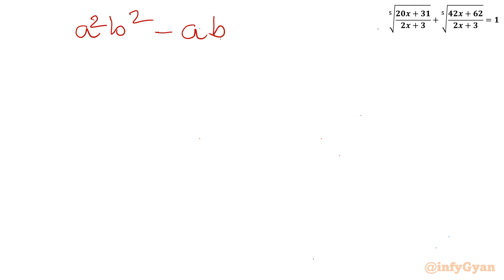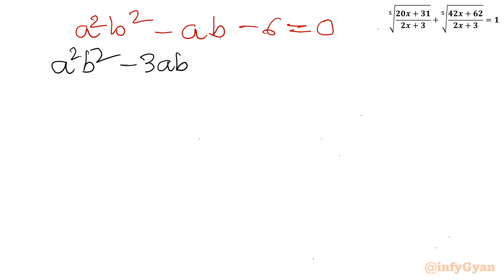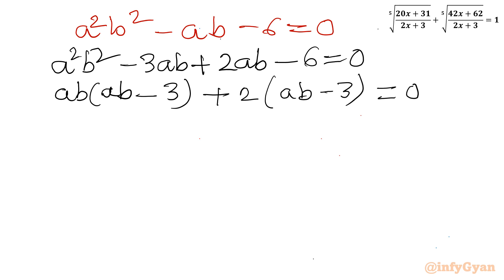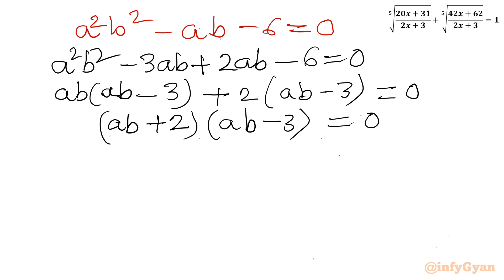This is a quadratic equation in ab. Using factorization: a²b² − ab − 6 = (ab − 3)(ab + 2) = 0. So the solutions are ab = 3 and ab = −2.